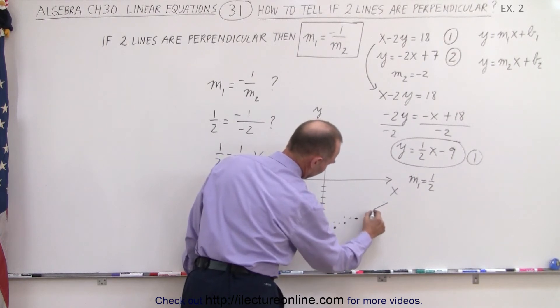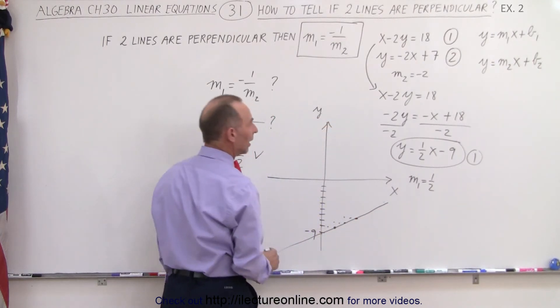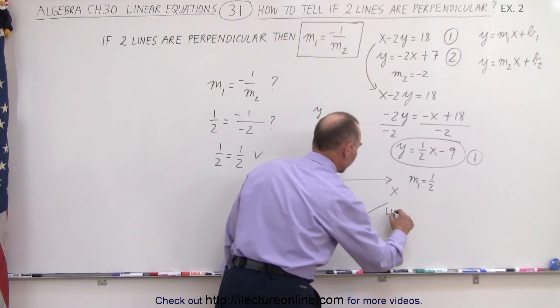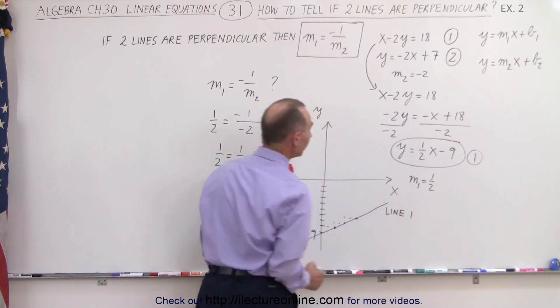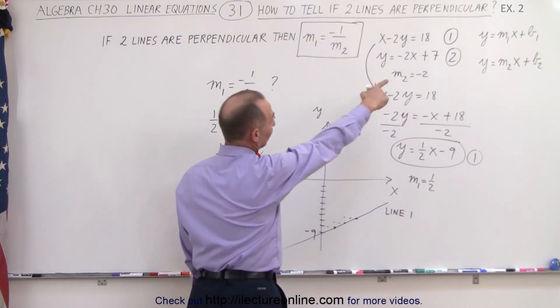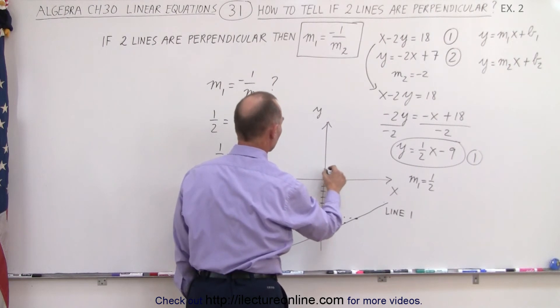You can see that this line looks kind of like that, all right? And this would be line 1. Line 2 has an intercept of 7, 1, 2, 3, 4, 5, 6, 7, right there,